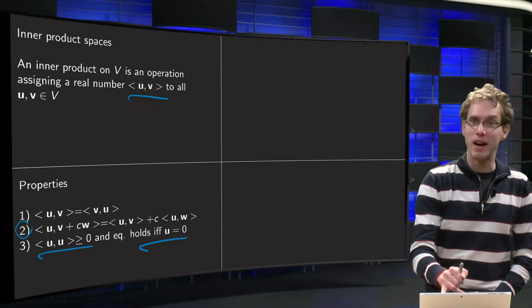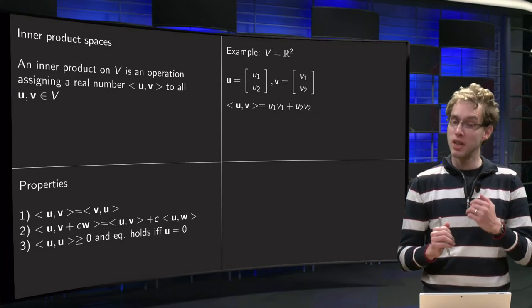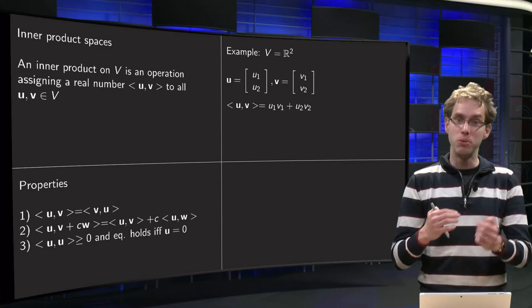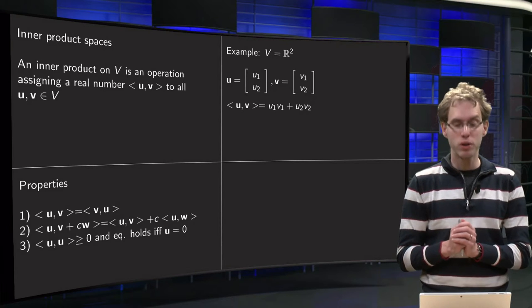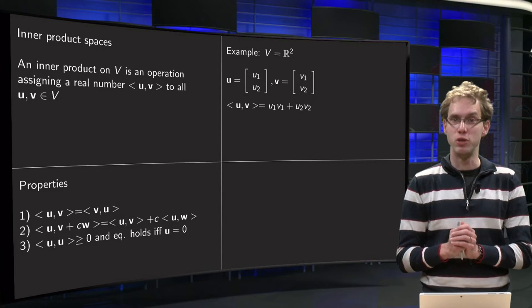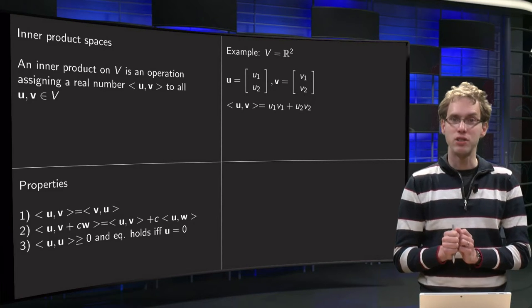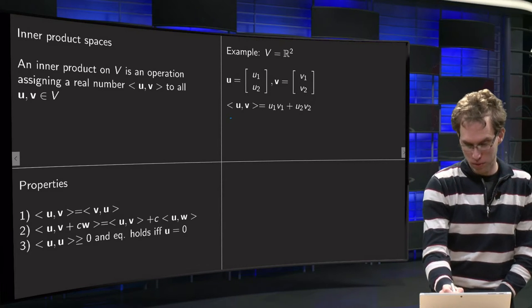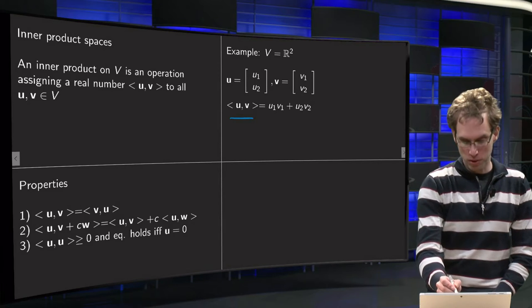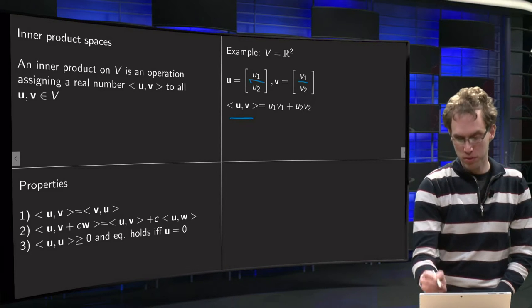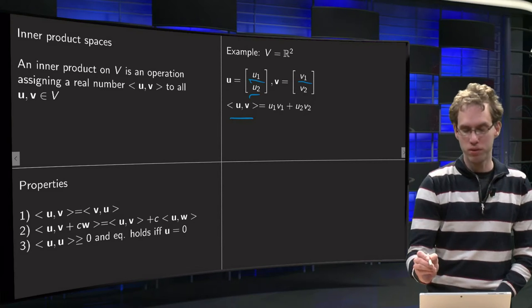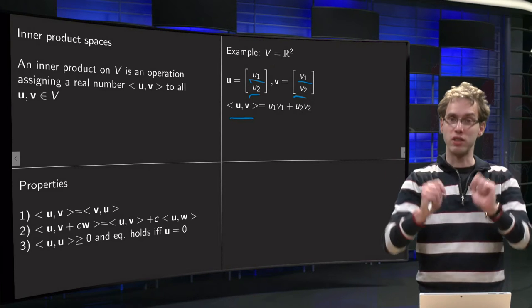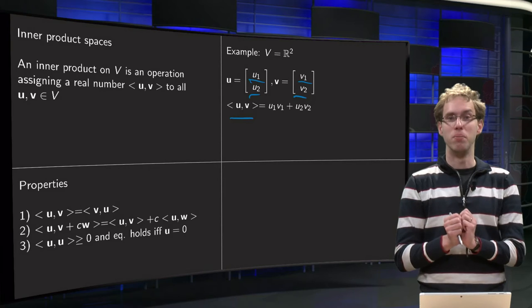Well let us look at a familiar example to see whether those properties actually hold. So take V equals R² and take two arbitrary vectors, u equals (u₁, u₂) and v equals (v₁, v₂) in R². And let us take a look what we took as our inner product. Well our inner product <u, v>, we took the first component of u times the first component of v plus the second component of u times the second component of v. So two vectors go in and one number goes out.